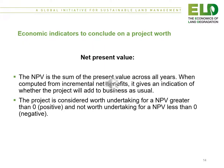There are three economic indicators usually used to conclude if a project is worth it or not. The first is the net present value (NPV), which is the sum of the present value across all years under consideration. When computed from incremental net benefits, it gives an indication of whether the project will add to the business as usual. The project is considered worth undertaking when the NPV is greater than zero, and not worth undertaking when the NPV is less than zero.